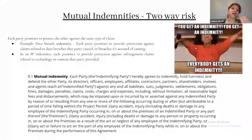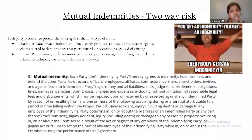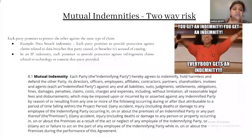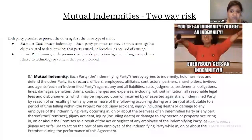Mutual indemnity is the most standard part of an indemnity clause — you will find it in 99 agreements out of 100. It's never written as 'mutual indemnity'; it usually appears as 'indemnity' and says 'each party.' Because it says 'each party' rather than 'vendor' or 'customer,' either party can be the indemnifying party — that is why it becomes a mutual clause. Just one word changes the meaning of the entire clause.